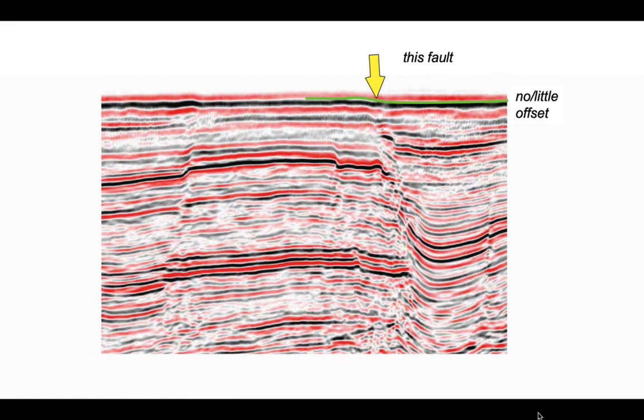Now let's go and have a look at the fault on the right. Again, the near seabed reflectors, we can trace across the profile with little or no offset. So the fault is not really represented at the seabed. It only exists in the subsurface.